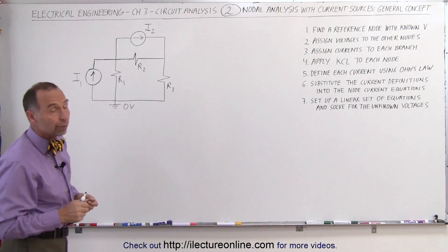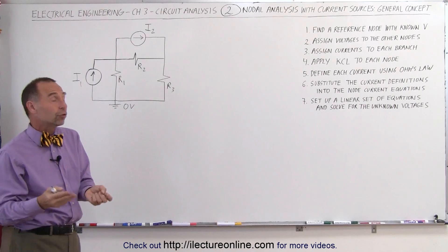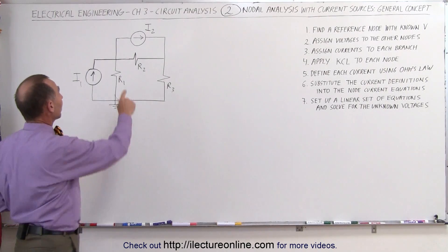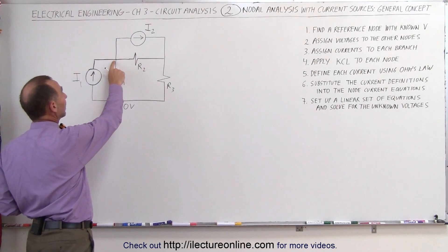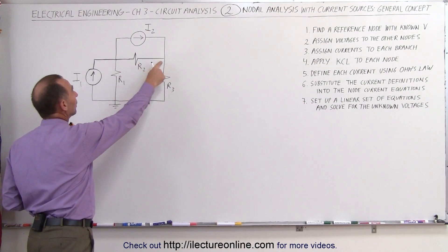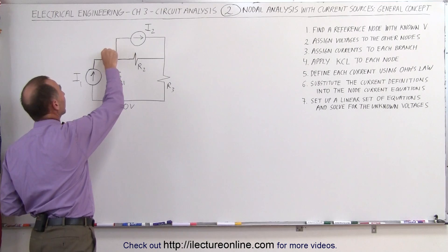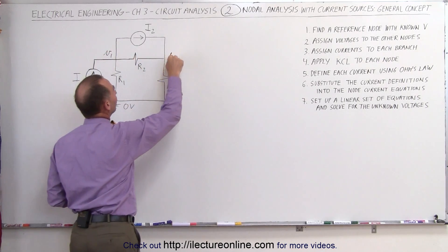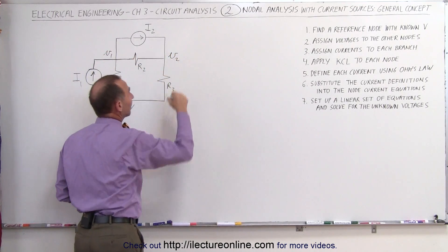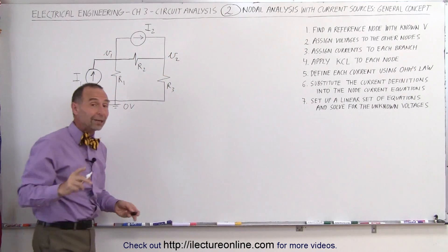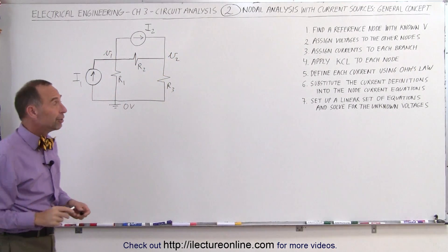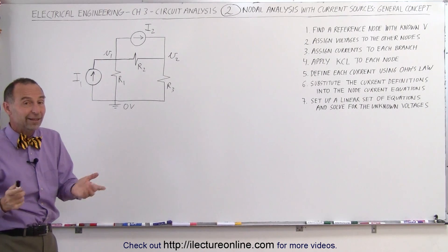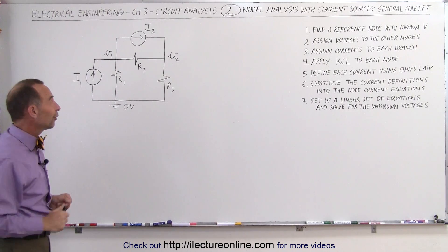Next we assign voltages to the other nodes. In this case there are two nodes, so we'll call them V1 and V2. Even though we don't know yet what V1 and V2 are, that's the purpose of this method — to find those voltages.